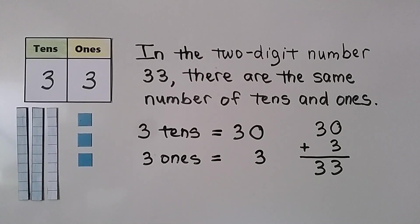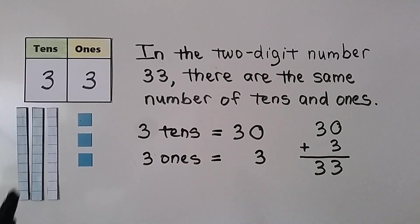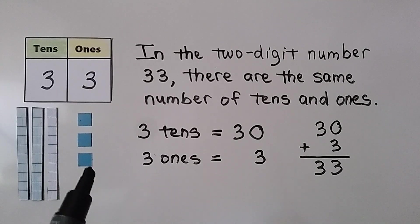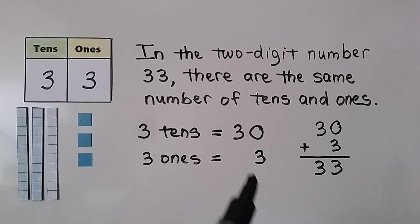In the two-digit number 33, there are the same number of tens and ones. We have three tens — that's 30 — and we have three ones. That equals 33.